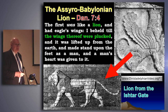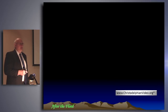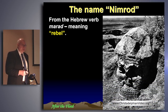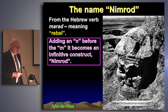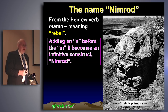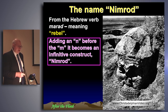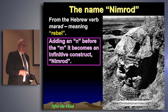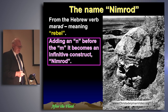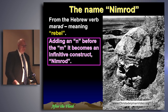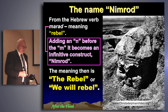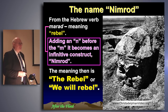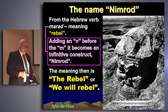The only known image of Nimrod. The Hebrew word Marad is the basis of the name Nimrod — adding an N before the M becomes an infinitive construct in the Hebrew: Nimrod. It means 'the rebel' or 'we will rebel.' As we saw yesterday, he was the 13th generation from Adam, 13 being the number of rebellion.